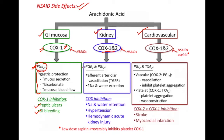Basically, the prostaglandins PGE2 and prostacyclins play an important role in regulation of renal hemodynamics and renal salt and water excretion. Whenever there is a decrease in effective circulatory volume, they cause vasodilation, resulting in an increase in renal blood flow and glomerular filtration rate.